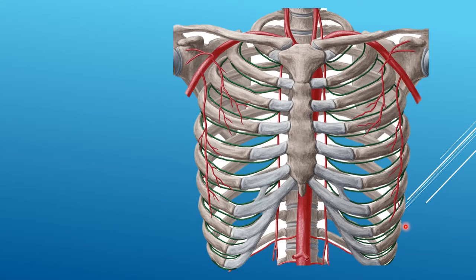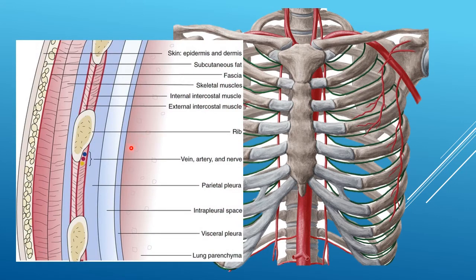If our approach takes us between the ribs, whether parasternally or apically, we need to remember the anatomy of the chest wall: the neurovascular bundle tends to run at the lower border of each rib. So we should be aiming for the cephalad border of the rib. Diagrams make it look like there's acres of space between the ribs, but it's often not nearly so straightforward. Feel for the upper border of the rib and stay as close to that as you can with your needle.